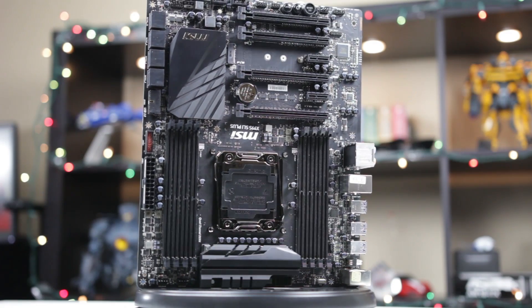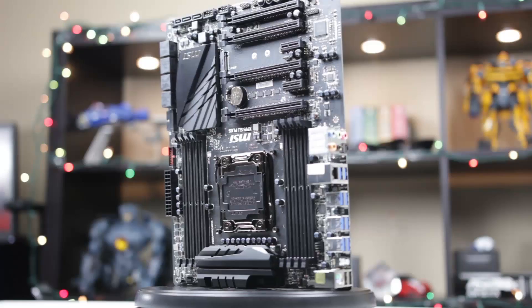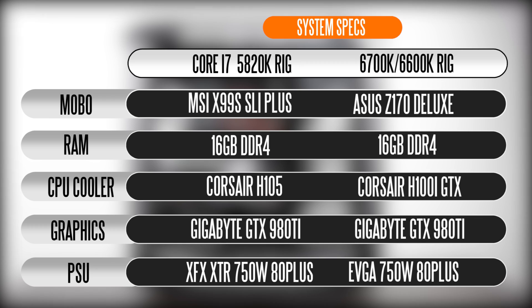For the 5820K benchmarking rig, we're using the MSI X99 SLI Plus motherboard platform. Both rigs are going to be using 16 GB of DDR4 memory from Corsair, clocked around 2,800 MHz. For our Skylake processors, we're going to be using the Asus Z170 Deluxe motherboard, with the same RAM configuration. If you want more detailed information about both of these rigs, check out the description where you'll find the breakdown and parts list of everything we're using for the benchmarking.